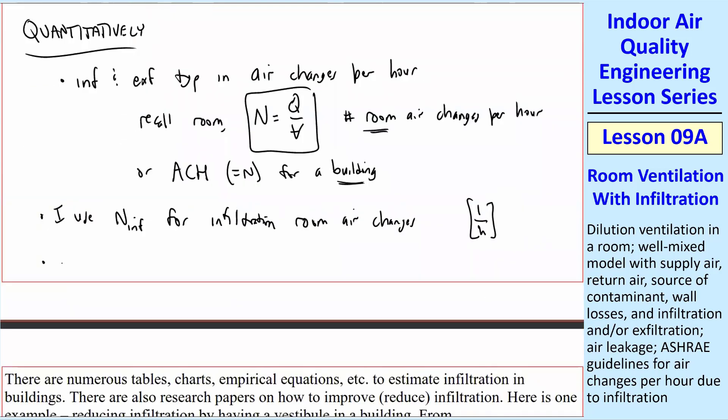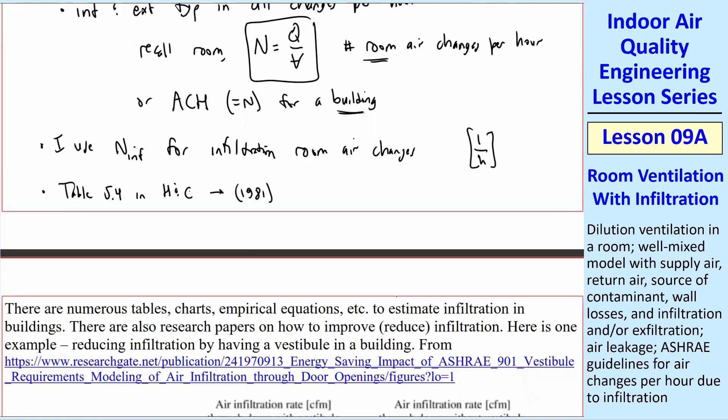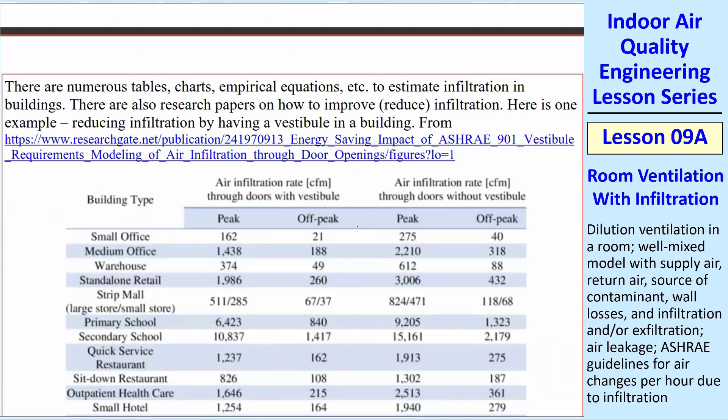I'll point you to, for example, table 5.4 in our textbook. These are some common infiltration room rates for windows and things like that, but this is from 1981, which was fairly current when we wrote the book. But things have gotten a lot better since then. So unless you have a much older house, we have to look for some updated values for infiltration rates. There are numerous tables, charts, empirical equations to estimate infiltration in buildings. Also, people do research, and mostly in architectural engineering, on how to reduce infiltration.